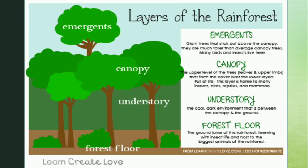Most of the trees are tall and broad-leaved and grow very close to each other. They form an umbrella of leaves and branches over the entire forest — this is called the canopy. Can you see the canopy in the picture? The canopy is so dense that it does not allow much sunlight to reach the forest floor. The shorter plants growing under the canopy make up the understory. These plants are shade-loving and do not need a lot of sunlight.